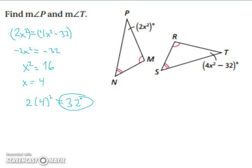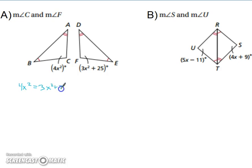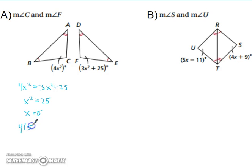Take a moment and pause the video to try these next two on your own. Using the third angles theorem, both angles must be congruent: 4X squared equals 3X squared plus 25. Subtract 3X squared from both sides: X squared equals 25, so X equals 5. Substituting back in: 4 times 5 squared gives us 100 degrees.